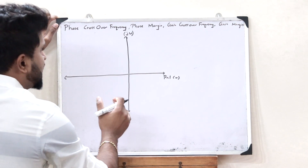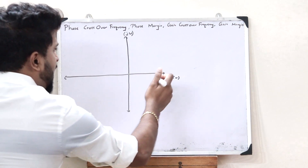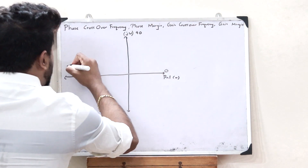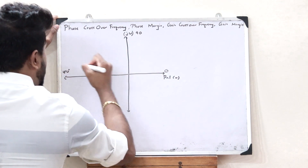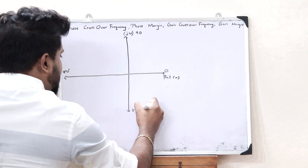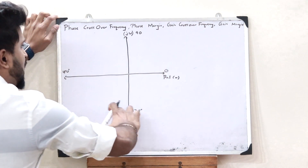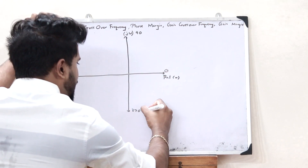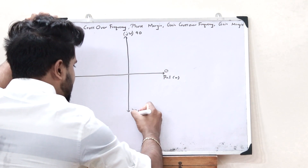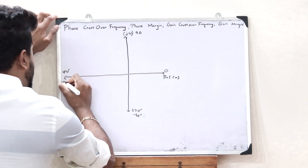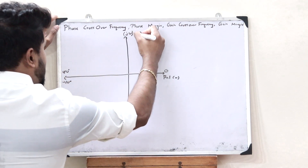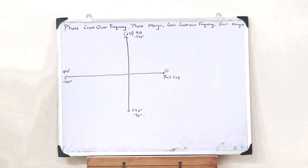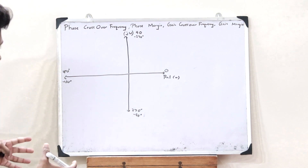Upon taking the angles in the case of an S-plane, we have 0 degrees, 90 degrees, 180 degrees, and 270 degrees in the anticlockwise direction. But when we go in the clockwise direction, we have minus 90 degrees, minus 180 degrees, minus 270 degrees, and minus 360 degrees. So this is the S-plane.